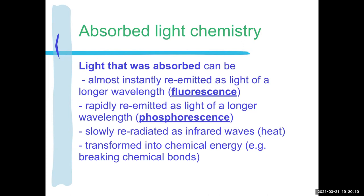Fluorescence just excites the electrons of the particular part of the fluorophore that is fluorescing, gets them all excited, and then they drop back down to the regular state. So it's just a moment in time where they're excited and then they radiate out the light they've absorbed — but as less energetic light, because some of it goes off as heat.